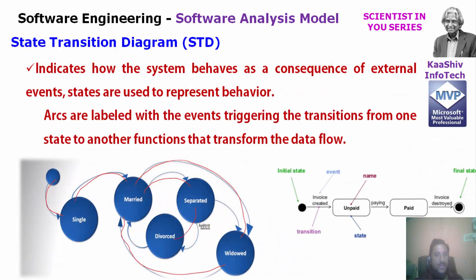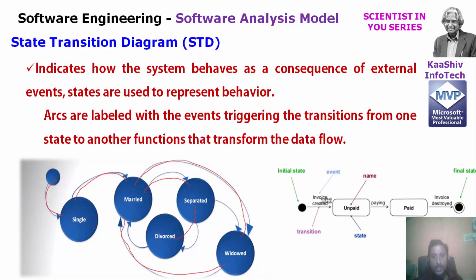The next element is the state diagram. The state diagram indicates how the system behaves. For example, first I am going to buy something — I am in the initial state. After a purchase, an invoice will be created. The invoice is created and it is in an unpaid state, with attributes like name, state name, and phone number.